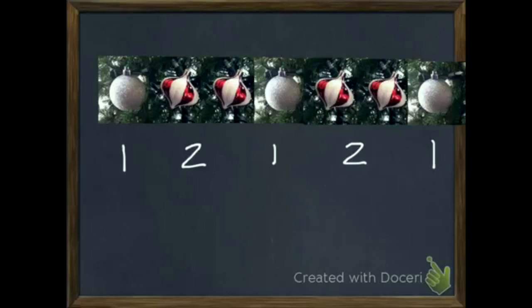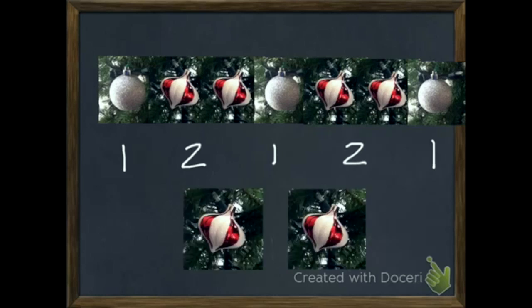In your notebook, go ahead and write down what you think the next two ornaments are going to be. If you need to pause it really quickly, you can, but here are the next two. Since we just had one silver, and our pattern is next two stripes, we have two more stripes.